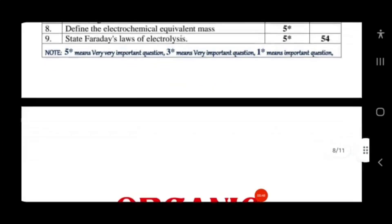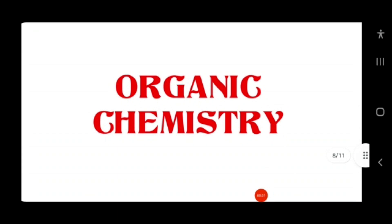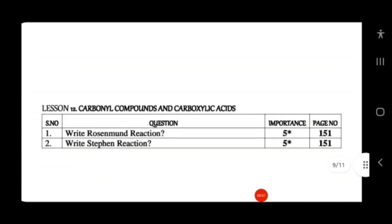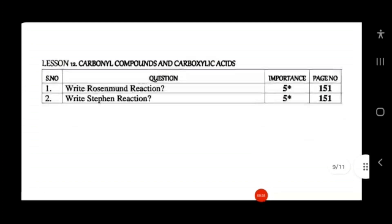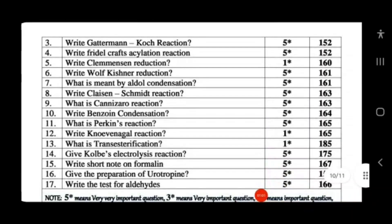For organic chemistry, Lesson 12 covers carbonyl compounds — aldehydes, ketones, and acids. Key topics include Rosenmund reduction for preparation of aldehyde, Stephen reaction, Gattermann reactions, Friedel-Crafts acylation, Clemmensen and Wolff-Kishner reduction — which convert an aldehyde or ketone into an alkane — aldol condensation and its mechanism, Cannizzaro reaction, benzoin condensation, and Perkin and Knoevenagel reactions.